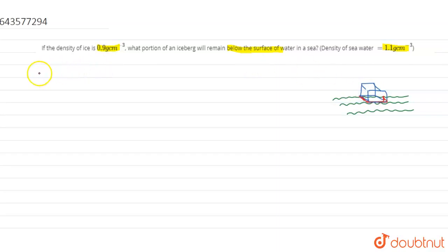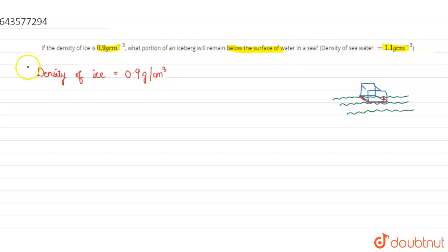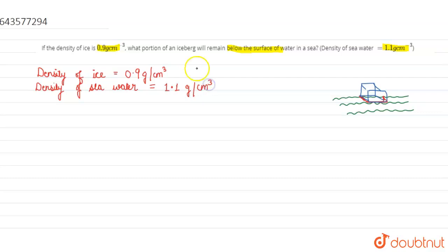First, we will write the given part. Density of ice is equal to 0.9 grams per centimeter cube. This is also given: the density of seawater is 1.1 grams per centimeter cube. Suppose this is rho 1 and this is rho 2.